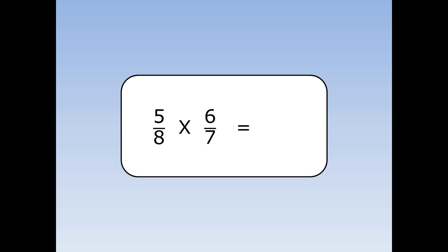5 eighths times 6 sevenths. 2 divides into 6, and 2 also divides into 8. So I'm going to divide them both by 2. 6 divided by 2 is 3. 8 divided by 2 is 4. Then I continue as before — top times top, bottom by bottom. 5 times 3 is 15. 4 times 7 is 28.